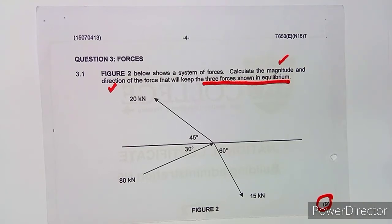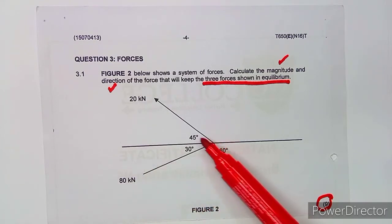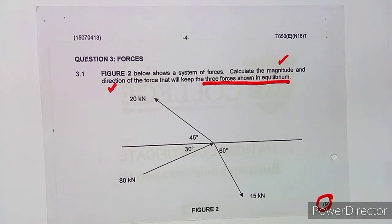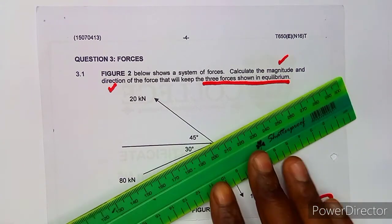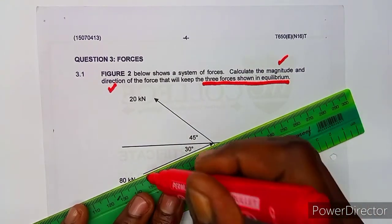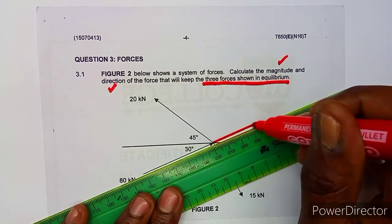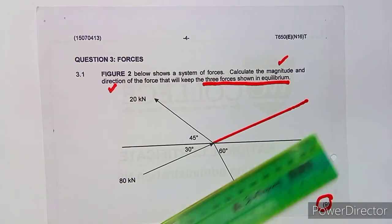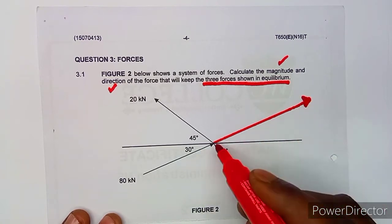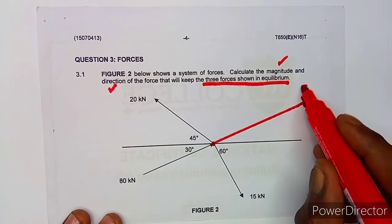What is important about this type of question: when you are working with forces, make sure that the forces are taken from the point going outward, outside of the diagram — not pointing inside like this force which is pointing inside. In a condition like that, you just need to extend that force outward. So if you extend this force and continue it, it is now pointing outside — from the point going outward — which is your 80 kilonewton.